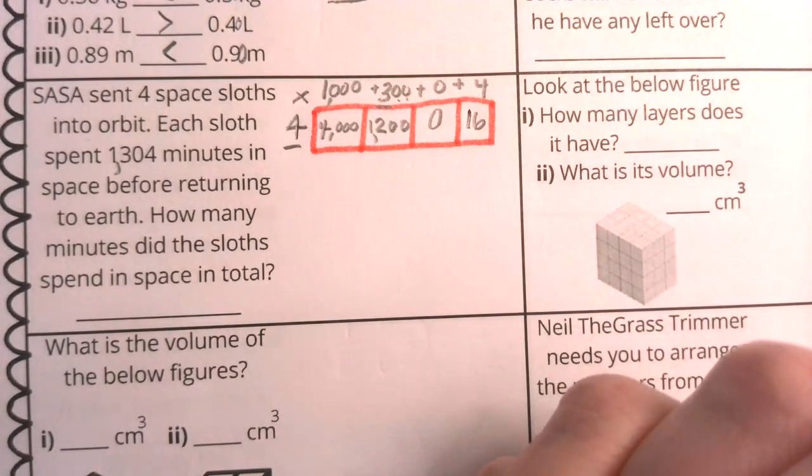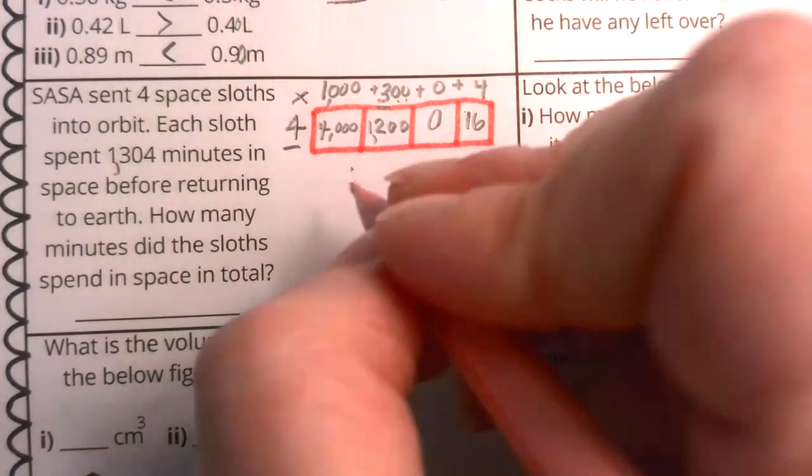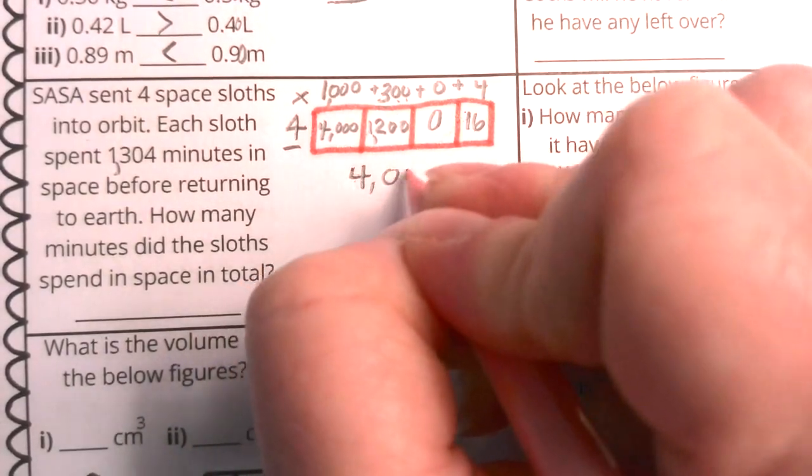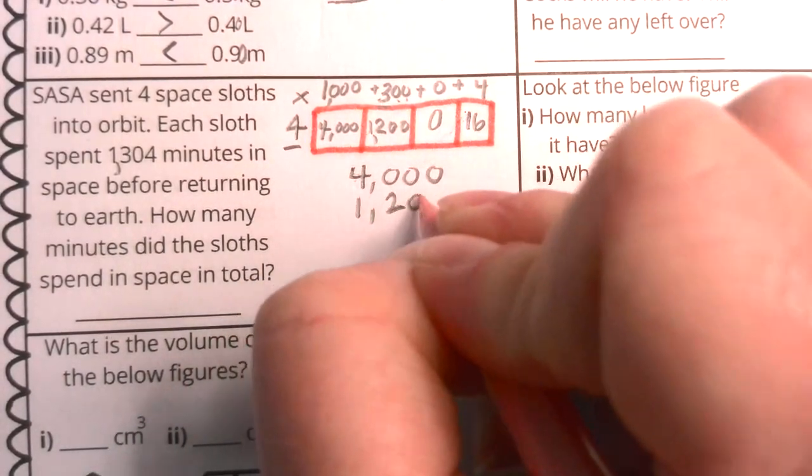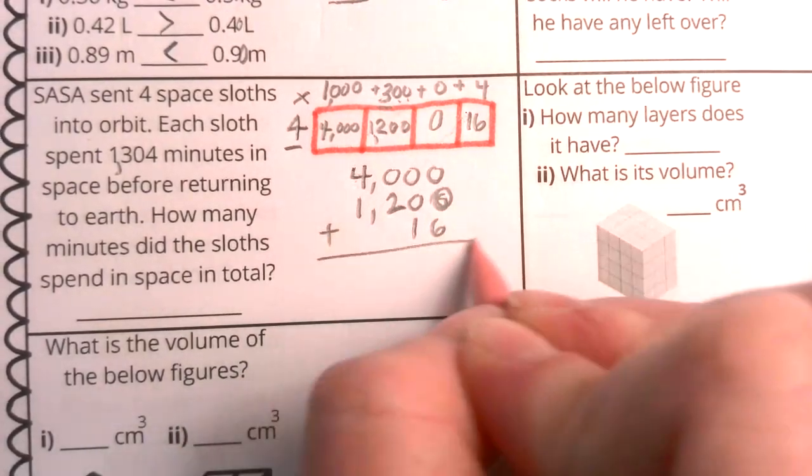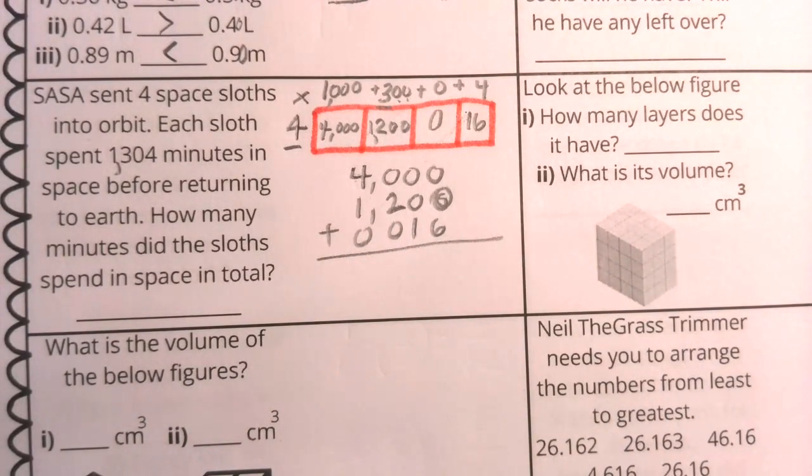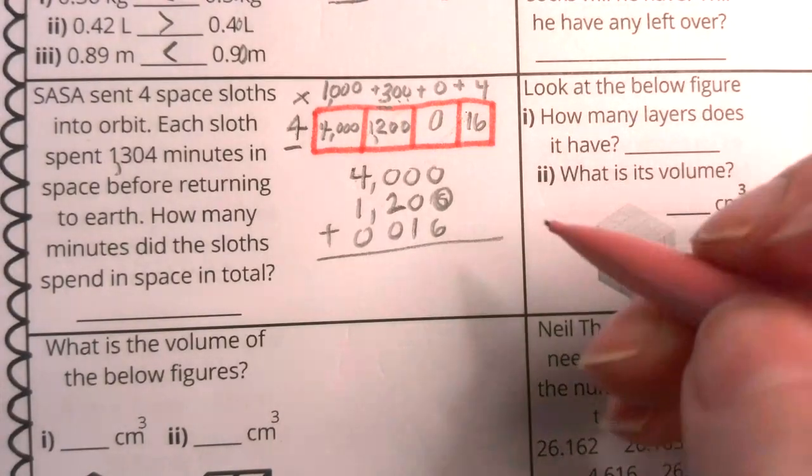Remember, boys and girls, what you do in the area model of multiplying is now we are going to add 4,000 plus 1,200 plus 16. All right. Now, if I have anything that doesn't have partner place values, I'm going to go ahead and add them because that helps me to keep those values nice and aligned.